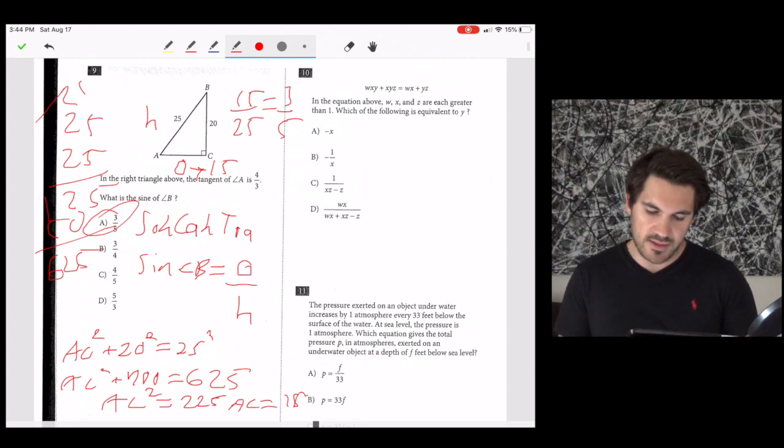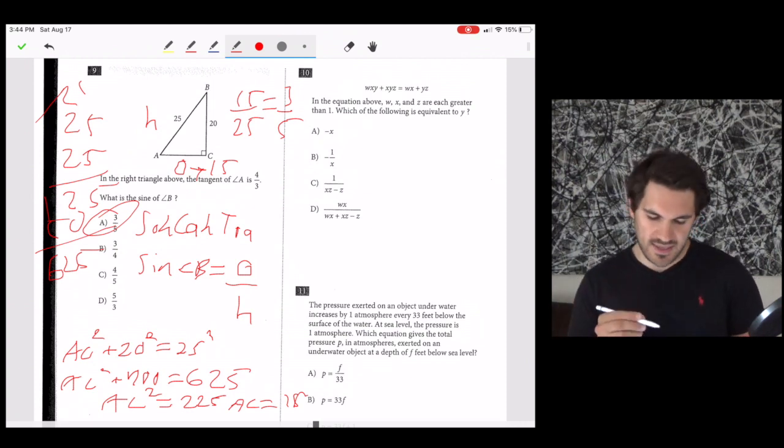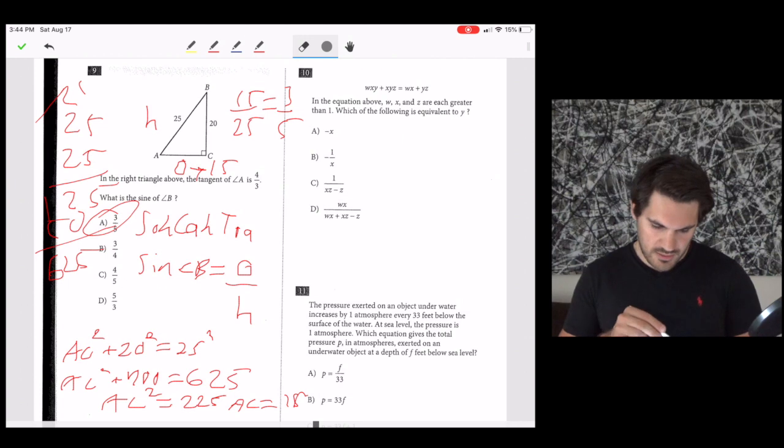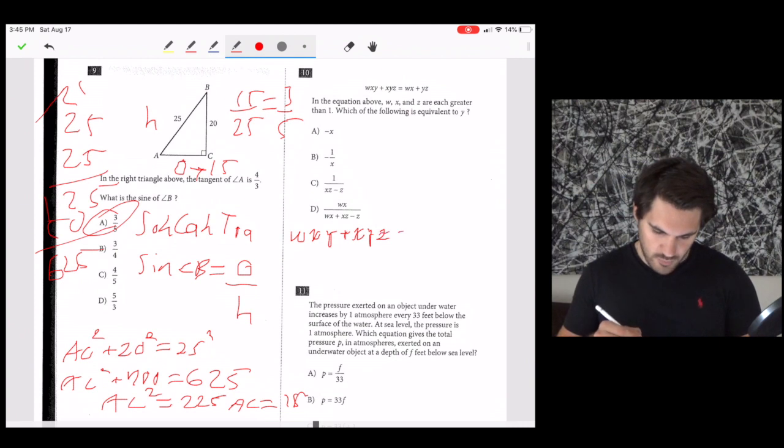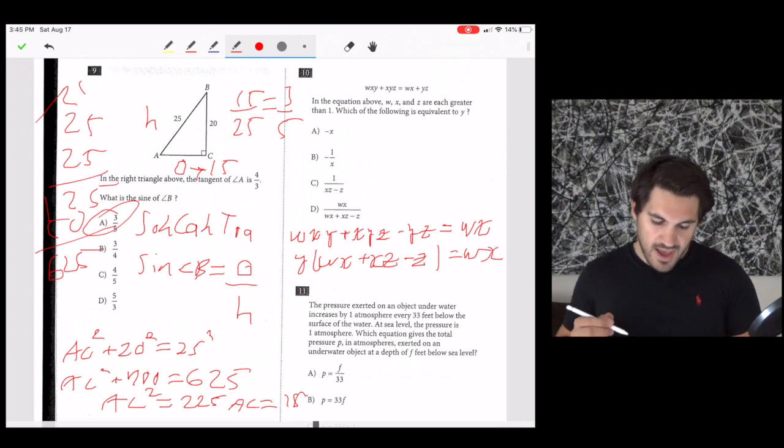Number 10, in the equation above, W, X, and Z are each greater than 1, which of the following is equivalent to Y. Let's get all the Ys together. So W times X times Y plus X times Y times Z minus Y times Z equals W times X. We can factor a Y out of everything. So Y times W times X plus X times Z minus Z equals W times X. And then if we now just divide both sides by W times X plus X times Z minus Z, isolating for Y, we end up getting D as our answer.